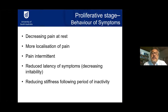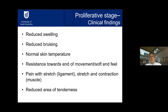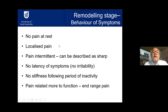In the proliferative phase, there is less pain at rest, more localization, pain tends to come and go rather than being constant, and reduced latency — stiffness that used to take four to five steps now takes one or two. This tells you they're progressing through the inflammatory process. Clinically you'll see reduced swelling, reduced bruising, normal skin temperature, and resistance towards end-range only with a reduced area of tenderness.